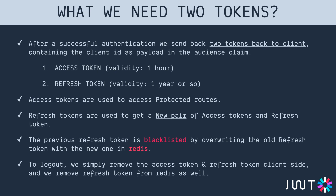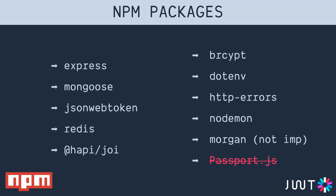For building this authentication API, we need the following npm packages: Express, Mongoose, jsonwebtoken, Redis, Joi for schema validation, bcrypt which uses the Blowfish algorithm to encrypt passwords, dotenv to store environment variables, and http-errors which is one of the most important packages — it allows us to handle errors gracefully and send appropriate responses back to the client rather than just logging to the console. We also use nodemon to restart the app on save, and Morgan to log requests in the console.